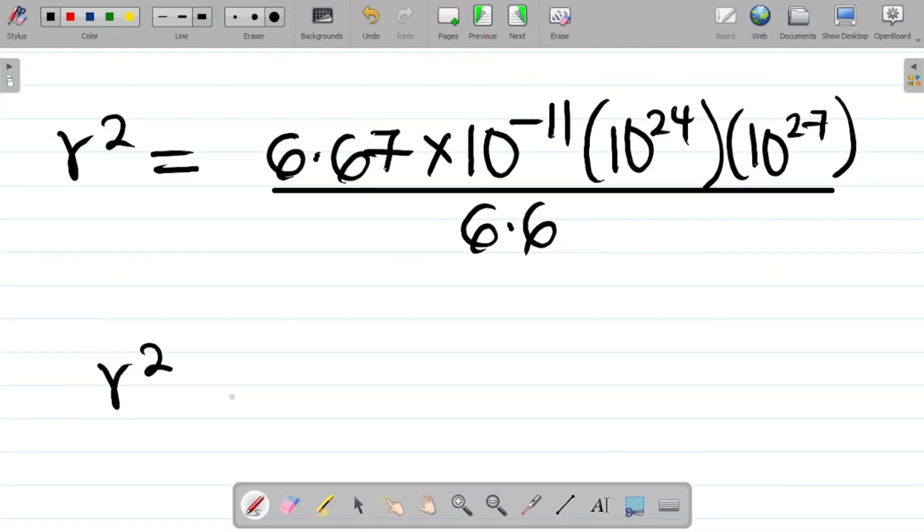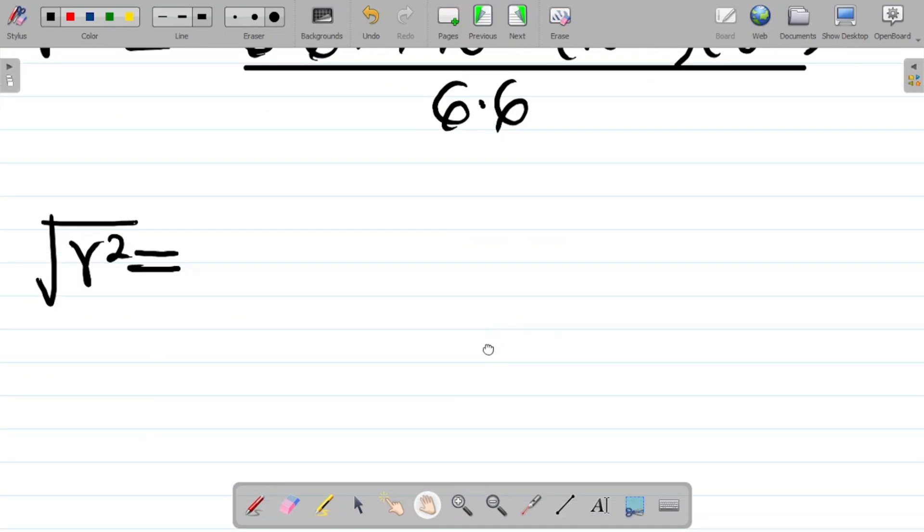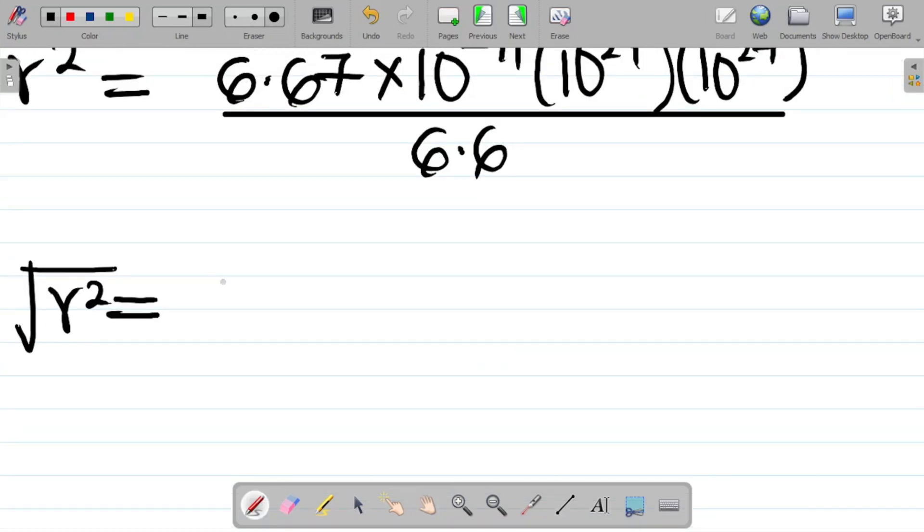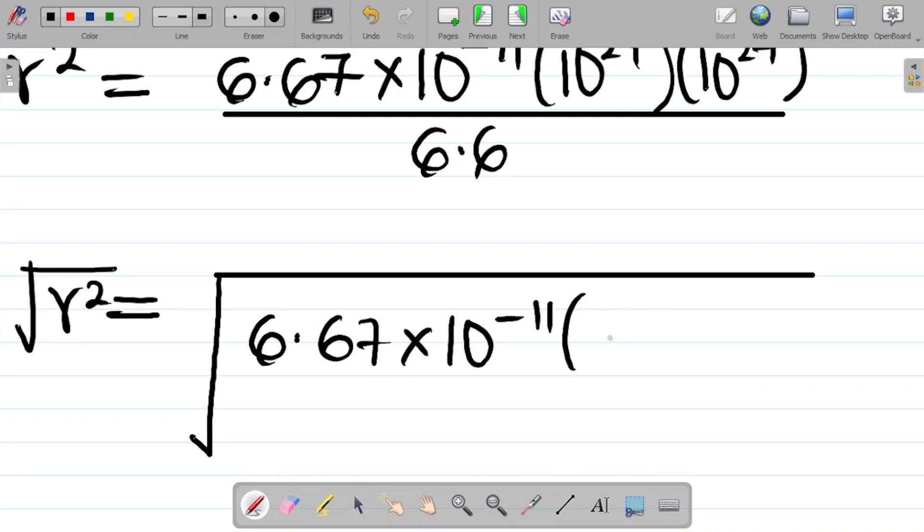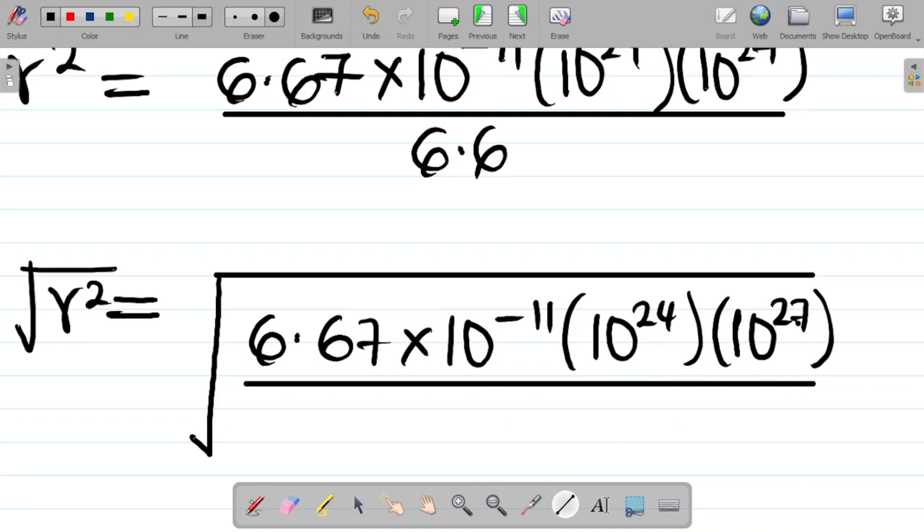To get R, simply take square root of both sides. Root R squared equals the square root of this, that becomes square root of 6.67 times 10 to power minus 11 times 10 to power 24, that's the first mass, then 10 to power 27, my second mass, all over 6.6.